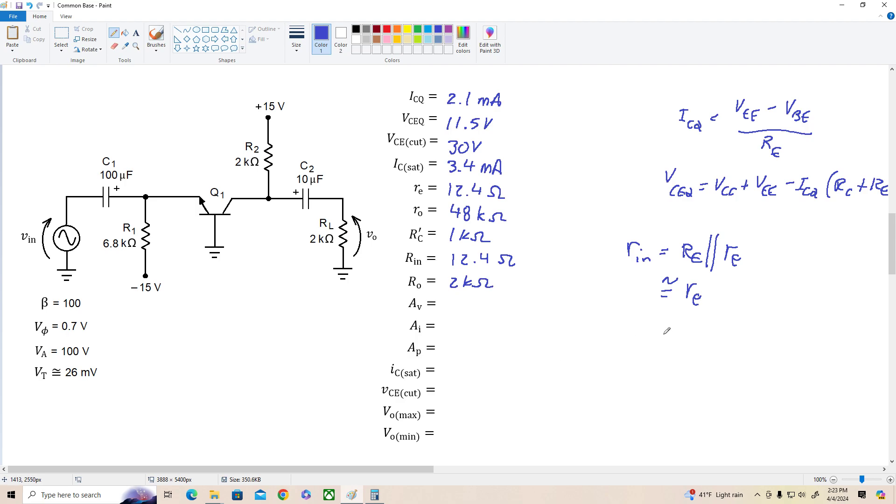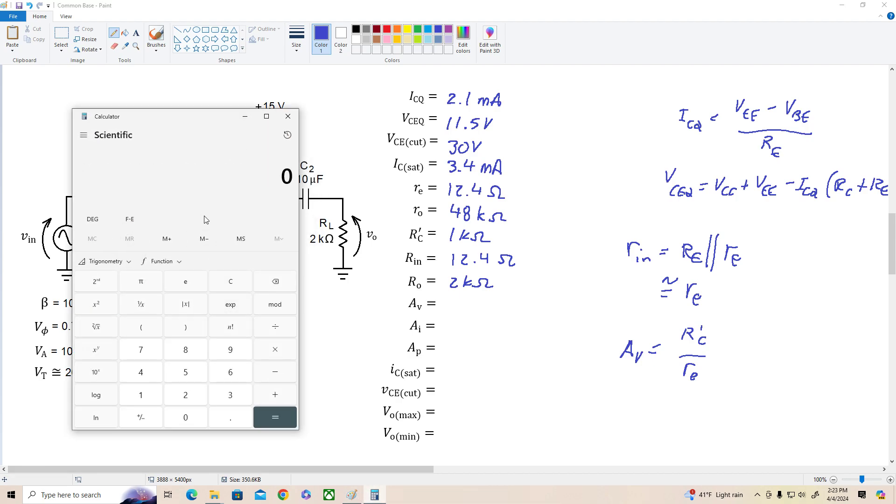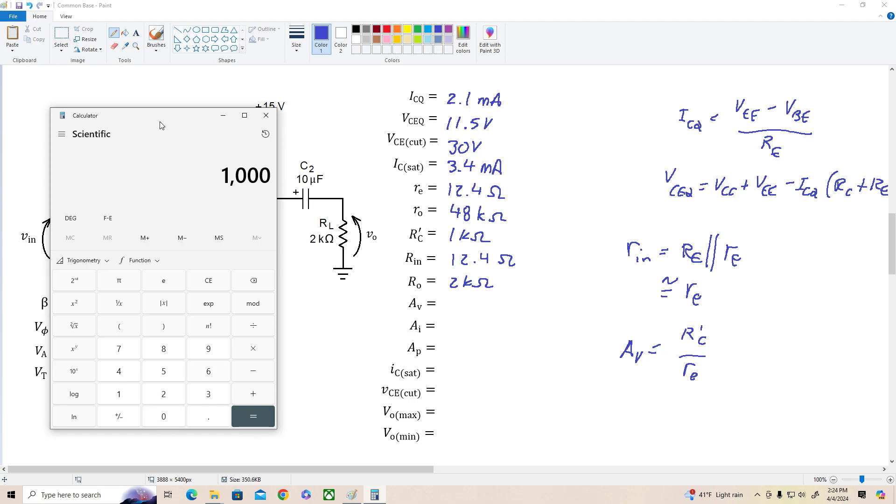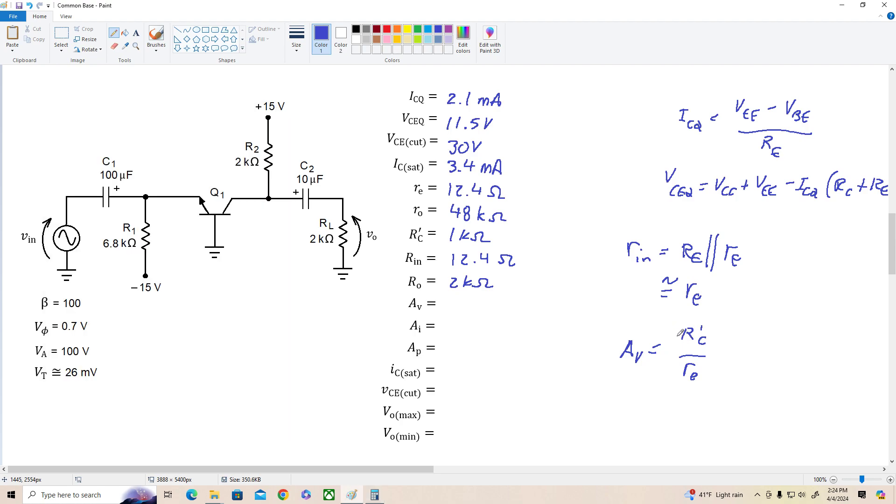Now the voltage gain. For this circuit, since there's no base resistance, AV equals R prime C over little RE. So what do we have? R prime C is 1,000 divided by little RE was 12.4. So we've got a voltage gain a little bit over 80. But remember, it's actually alpha times that. So let's just round it off to approximately 80. So AV is about 80.